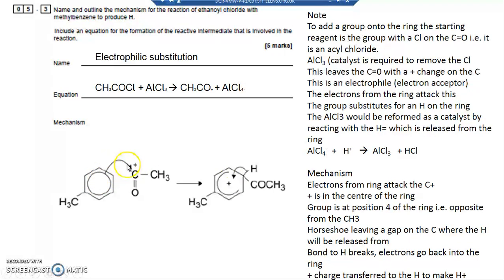Electrons have come from the ring, so that becomes plus. The C plus, the plus on the C has gone because it's had electrons put onto it, so it's neutralized the plus.